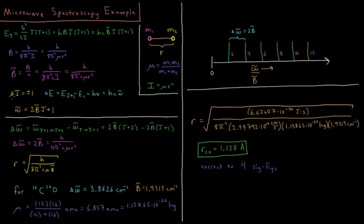Our selection rule for microwave spectroscopy is that we go up or down one quantum in J. We absorb a photon (ΔJ = +1) or emit a photon (ΔJ = −1). Delta E equals E(J+1) minus E(J), which equals hν — the frequency of our photon — or hcω̃, the inverse wavelength of our photon. So ω̃, our wavenumber, equals 2B̄ times (J+1), in units of wavenumbers (cm⁻¹).